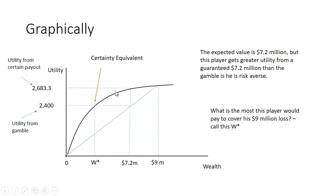Here's what it looks like graphically. We have his utility function with 9 million dollars on one end and zero on the other. The straight line represents expected values at different probabilities — at 100% for 9 million you're at one endpoint, at 100% for zero you're at the other. At 80% for 9 million and 20% for zero, the expected value is 7.2 million. Drawing up to the utility function, the guaranteed 7.2 million gives 2,683.3 units of satisfaction, whereas the gamble only gives 2,400. That's what it means to be risk averse — he prefers the sure thing to the gamble.